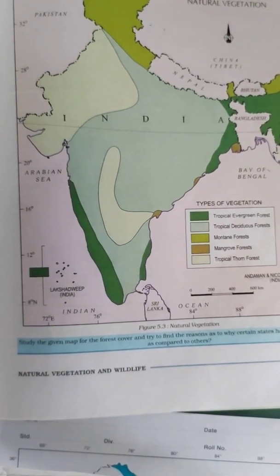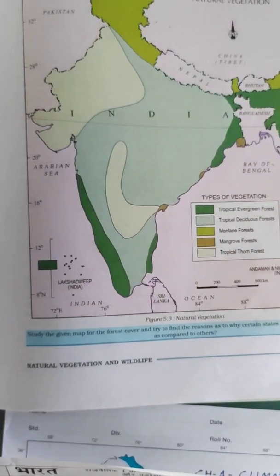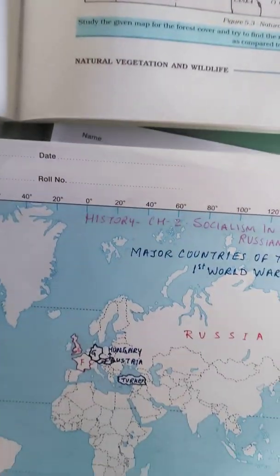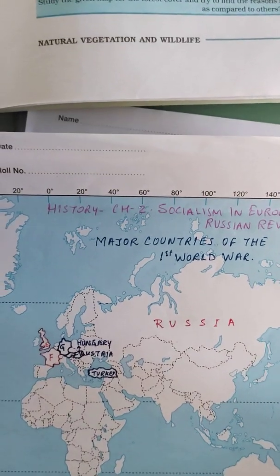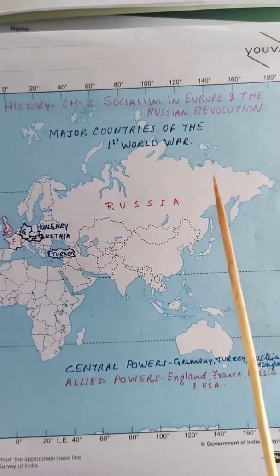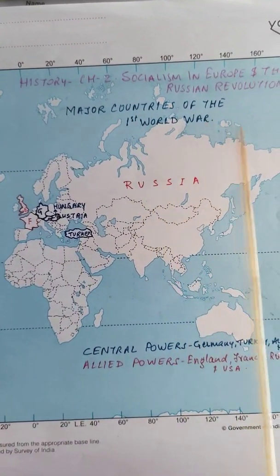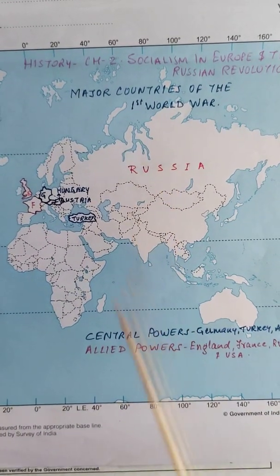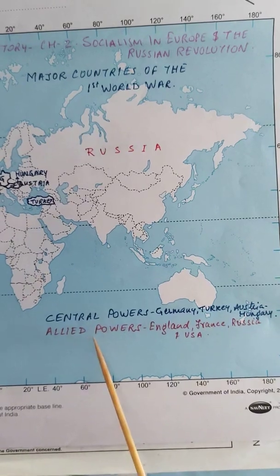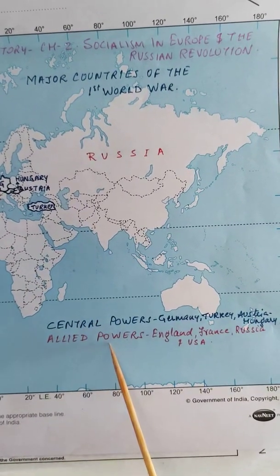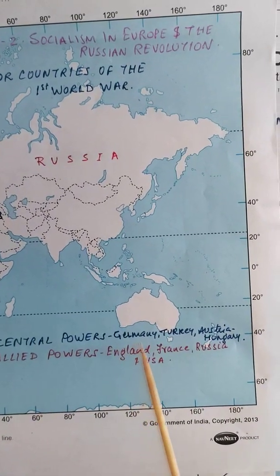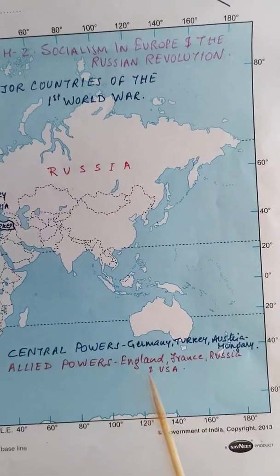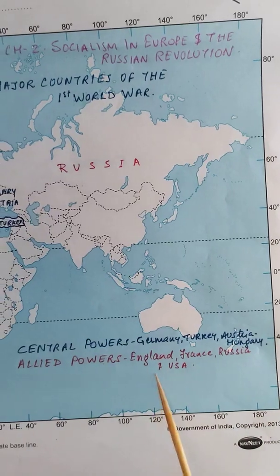From history, we have map pointing from chapter 2: Socialism in Europe and the Russian Revolution — specifically the major countries of the First World War. There are two groups: Central Powers and Allied Powers. In the Central Powers you need to mark Germany, Turkey, Austria, and Hungary. In the Allied Powers you need to mark England, France, Russia, and USA.